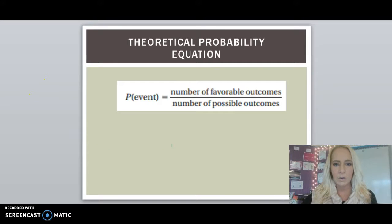This is the theoretical probability equation. So P of an event, or the probability of an event, is the number of favorable outcomes over the number of possible outcomes. So let's look at a video example.